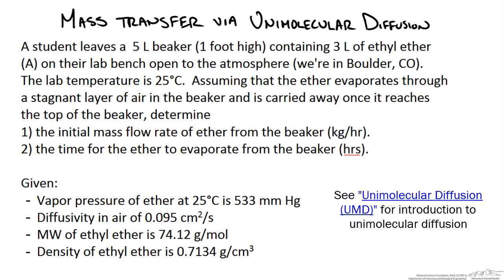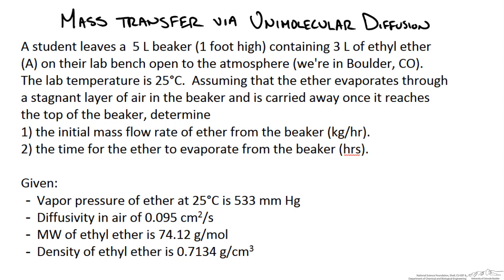In this screencast we are going to work through an example of mass transfer via unimolecular diffusion. The problem states that a student leaves a 5 liter beaker that is 1 foot high containing 3 liters of ethyl ether on their lab bench open to the atmosphere. We are in Boulder, Colorado, and the lab temperature is 25 degrees Celsius. We assume the ether evaporates through a stagnant layer of air in the beaker and is carried away once it reaches the top. We want to determine the initial mass flow rate of ether from the beaker and the time for the ether to evaporate.